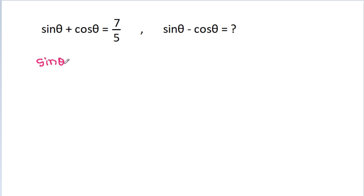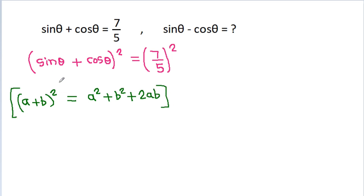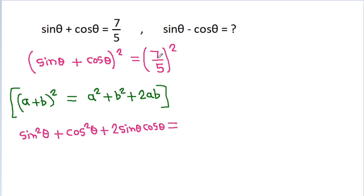So we have sin theta plus cos theta is equal to 7 by 5. And if we square both sides, using (a + b)² = a² + b² + 2ab, this will be equal to sin²theta plus cos²theta plus 2 sin theta cos theta, that is equal to 49 by 25.